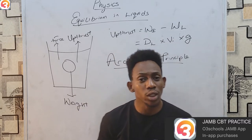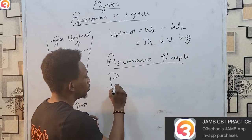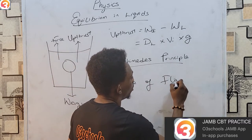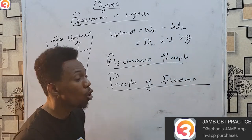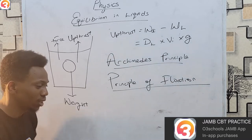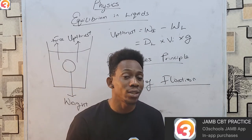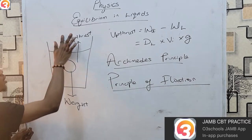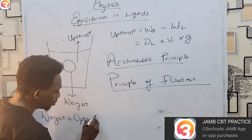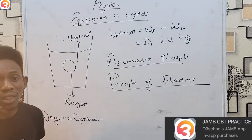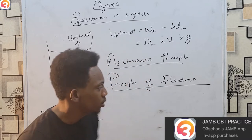However, Archimedes' principle doesn't really tell you whether the object should sink or float. For that, you look at the principle of flotation. This governs whether an object sinks within a liquid or floats. It states that an object floats in a liquid if it experiences an upthrust which is equal to the weight of the object. When the weight equals the upthrust, there is no net force — the object doesn't go down or up, so it simply floats.